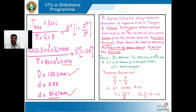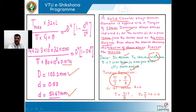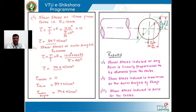Given values: solid circular shaft diameter = 40 mm; torque = 1 kN·m, converting to newton-millimeters: 1 × 10⁶ N·mm. We need the shear stress at three radial positions. Using the torsion equation T/J = τ/r — since angle of twist is not given, we use only this part. First, shear stress at the center: r = 0, so τ = 0. The shear stress at the center of the shaft is zero.